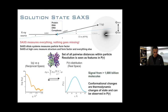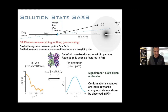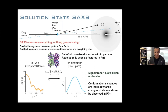Remember, whatever you put in the beam is going to scatter — nothing goes missing in SAXS. That's a good and a bad thing. If you have a sample with dimers, monomers, and aggregates, you're going to see the whole lot. The take-home message is that SAXS is a difference measurement.